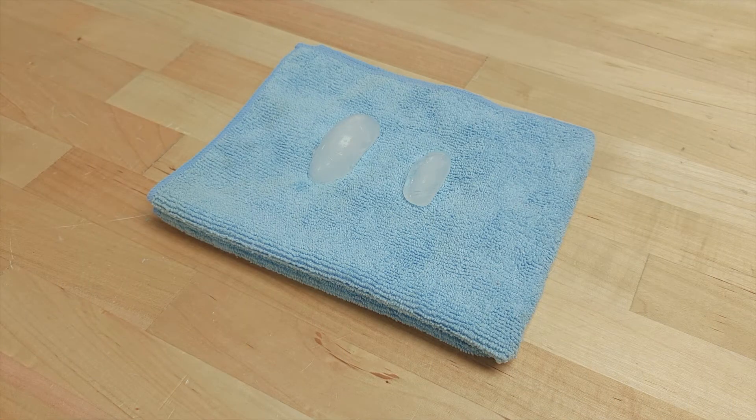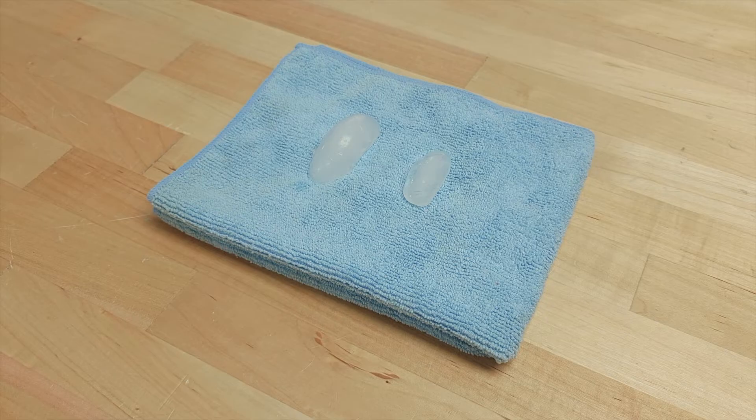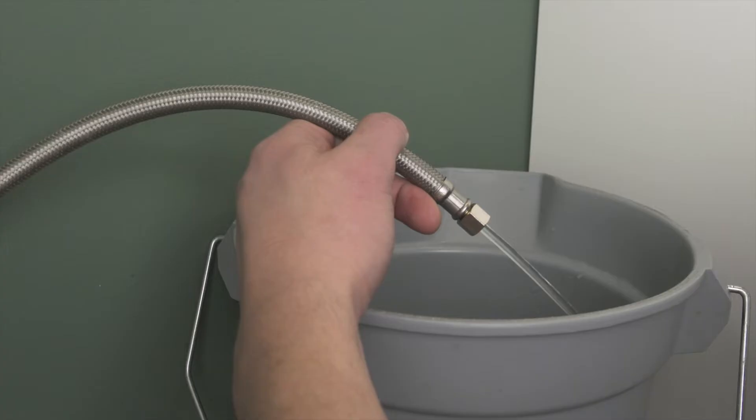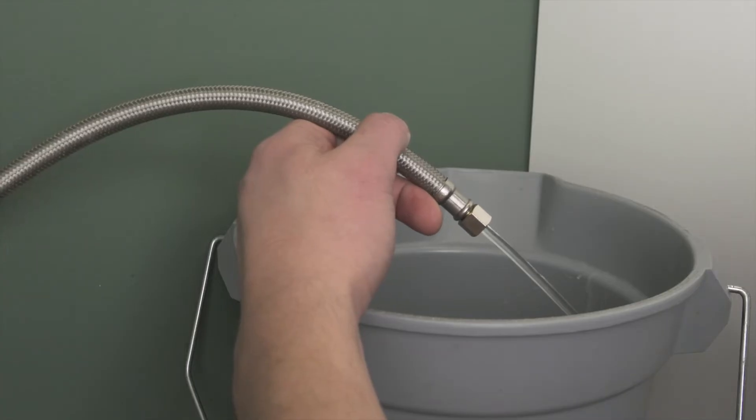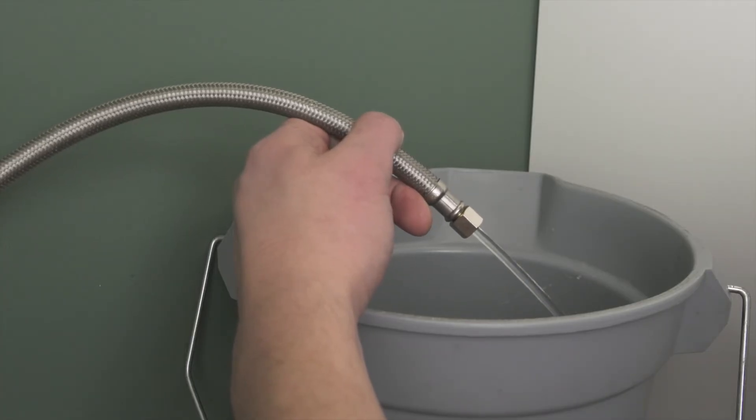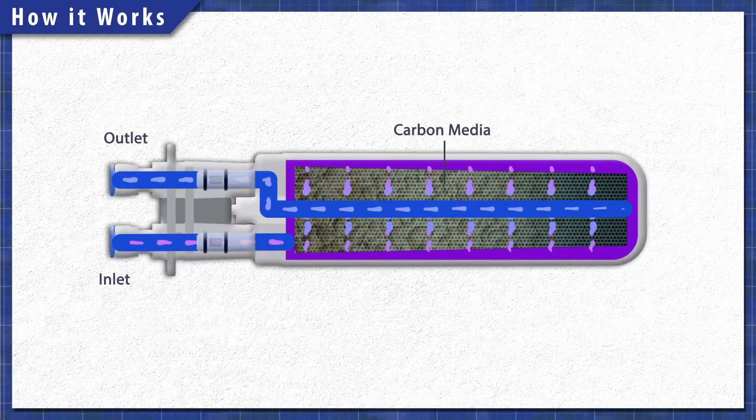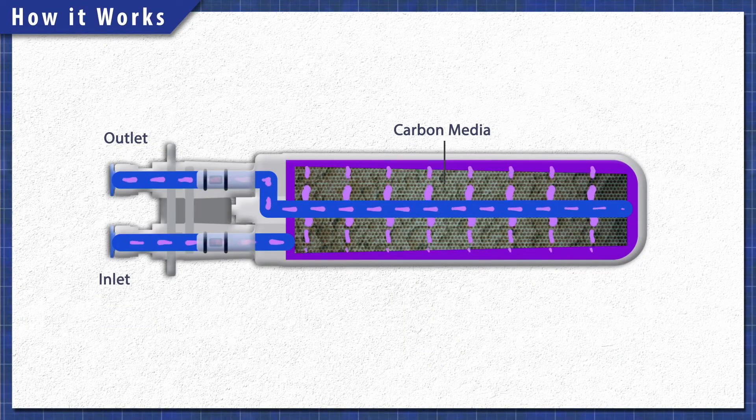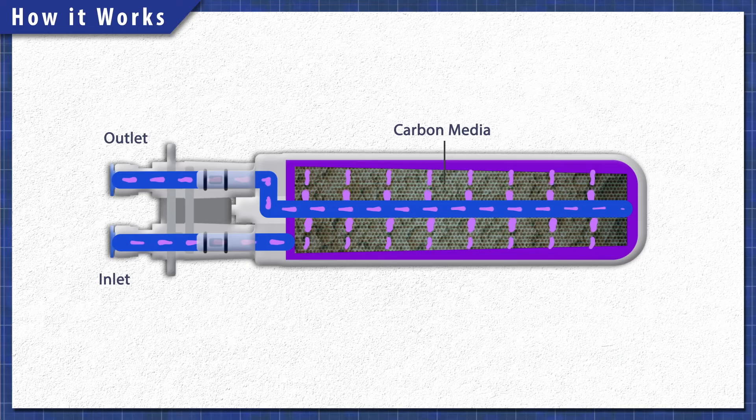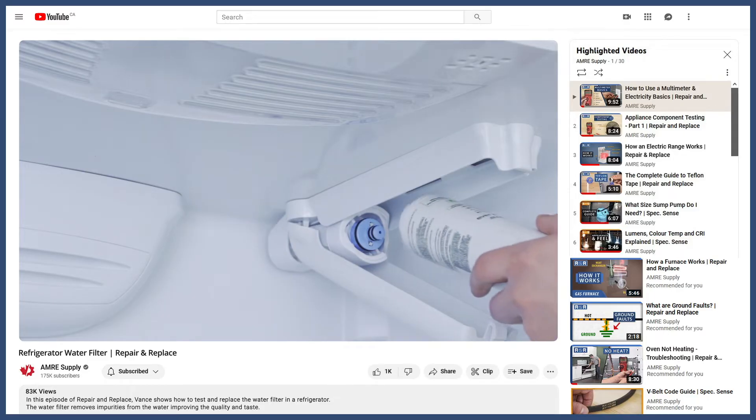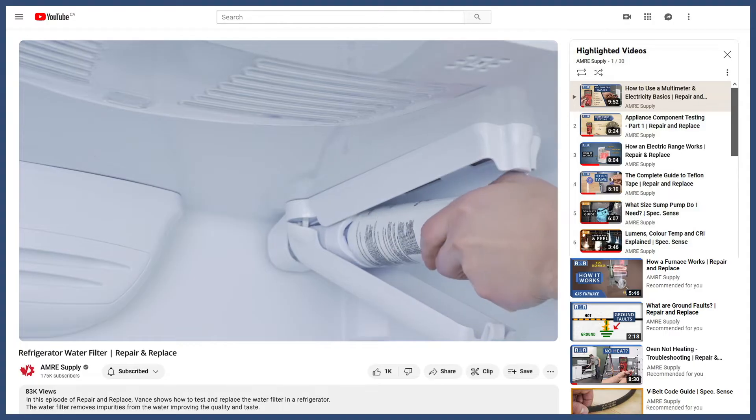In some cases, the ice cubes might be hollow or smaller than normal. To completely fill the tray, the water line needs to have between 20 and 120 psi. Without enough pressure, less water is dispensed into the tray. In other cases, a clogged water filter might restrict the flow of water to the ice maker. You can see how to troubleshoot this in the video linked below.